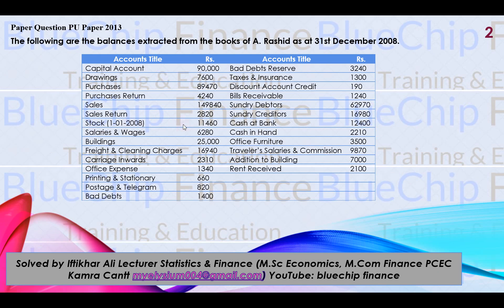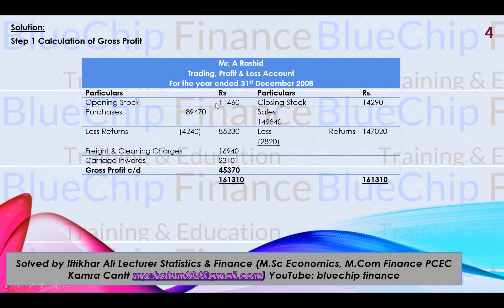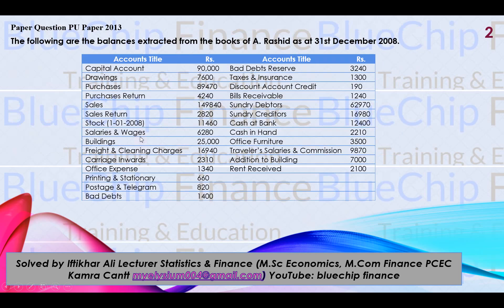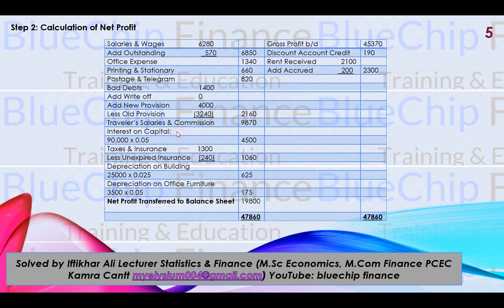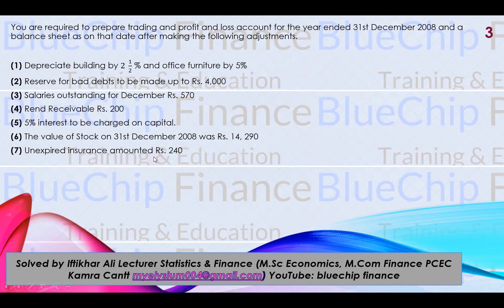Opening Stock is placed in only one place — on the debit side of the Trading Account: 11,460. After that, Salaries and Wages — since 'Salaries' is written first, it is considered an indirect expense and will be placed on the debit side of the Profit & Loss Account.